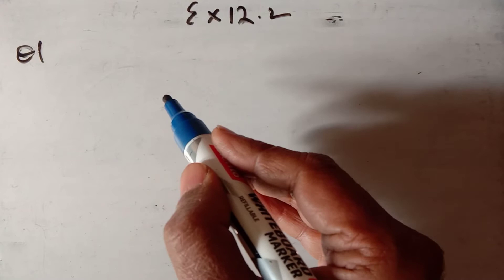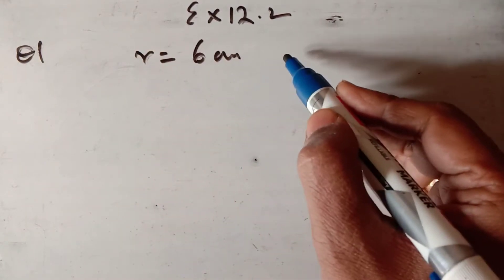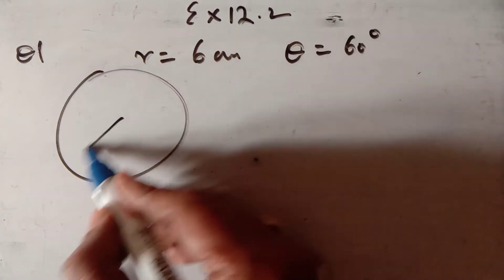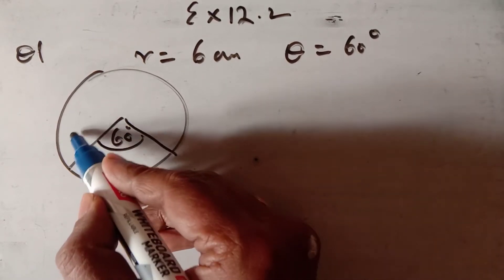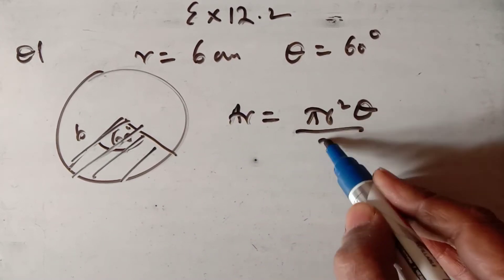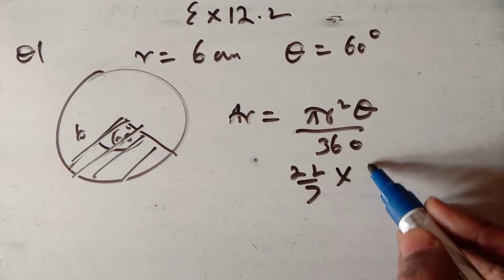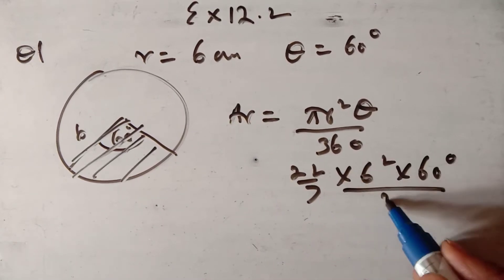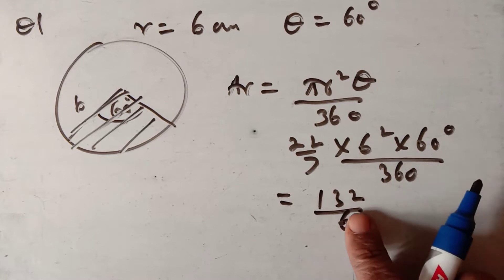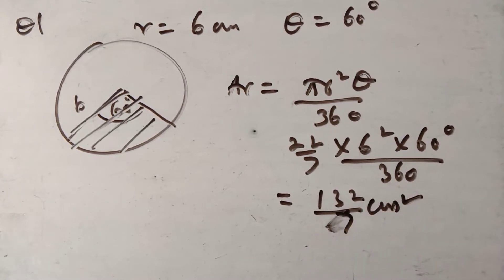Question 1 from Exercise 12.2: Find the area of the sector of radius 6 cm and central angle 60°. Using the formula πr²θ/360: (22/7) × 6² × 60/360, which simplifies to give an area of 132/7 cm².